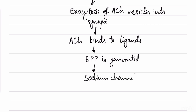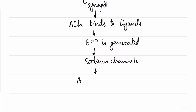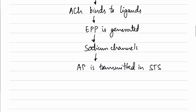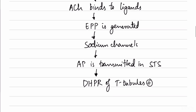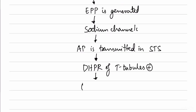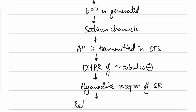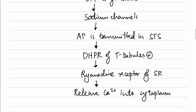With the opening of sodium channels, an action potential is generated in the skeletal muscle, which is transmitted into the sarco-tubular system. The DHPR receptors of the T-tubules are activated, which in turn activate the ryanodine receptors of the sarcoplasmic reticulum, releasing calcium into the cytoplasm. This calcium then acts on the actin and myosin filaments to cause contraction.